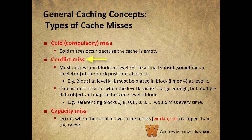One example would be a scheme in which block I from level K plus 1 could only be placed in block I mod 4 in the level K cache. A conflict miss occurs when the level K cache is large enough and could even have open blocks, but multiple data objects are mapped to the same level K block. In this example, referencing blocks zero, then eight, then zero, then eight, et cetera, would always miss. This is because both zero mod 4 and eight mod 4 are both zero, which means both of those blocks would have to go into block zero of the level K cache, even if other blocks in the cache were unused.